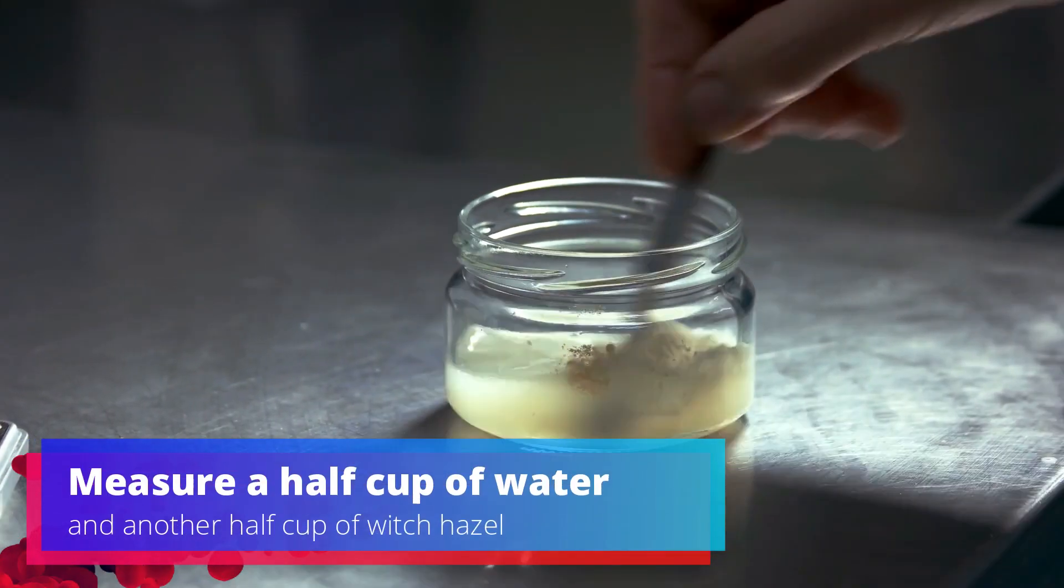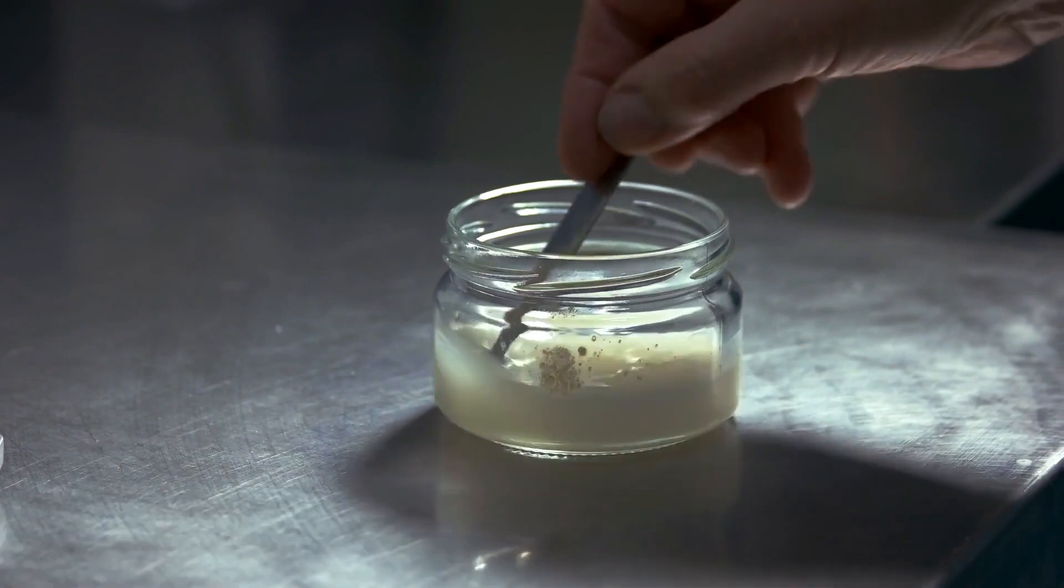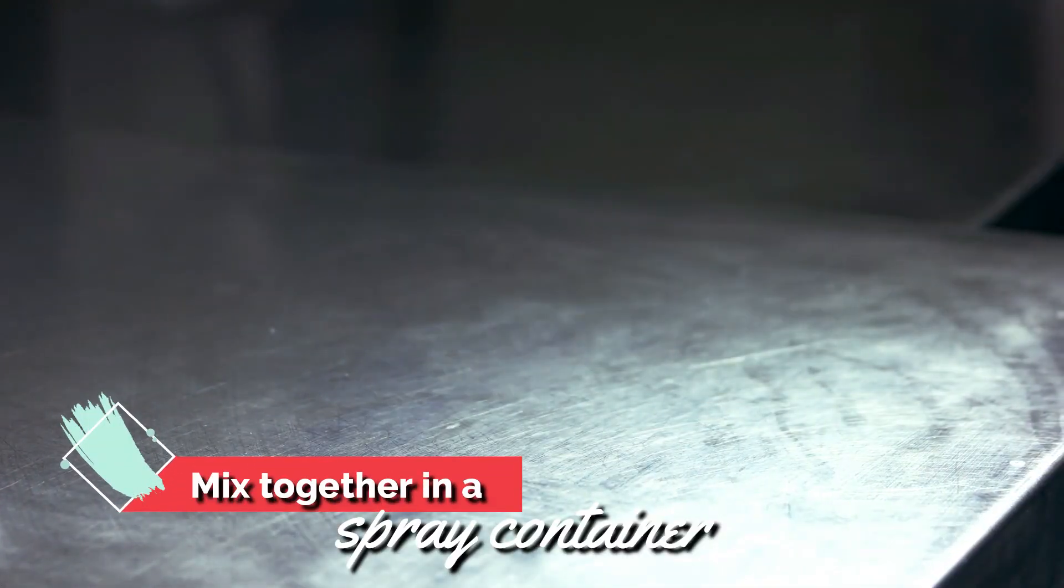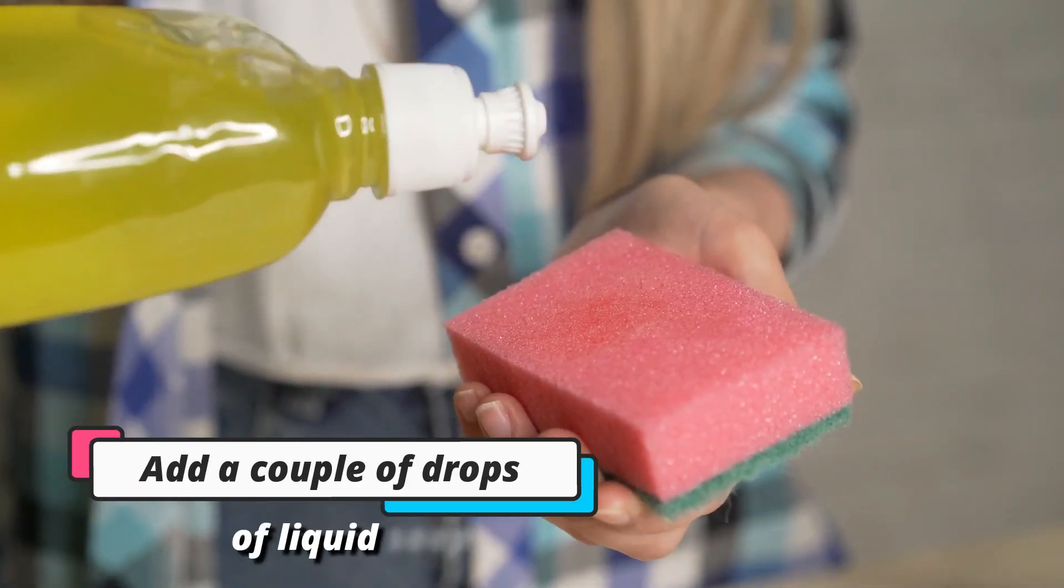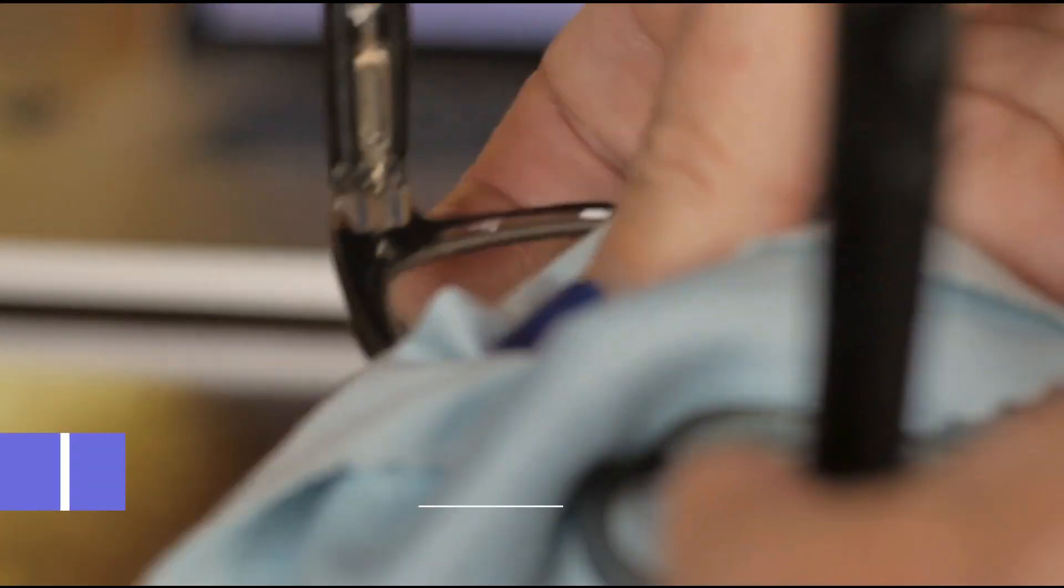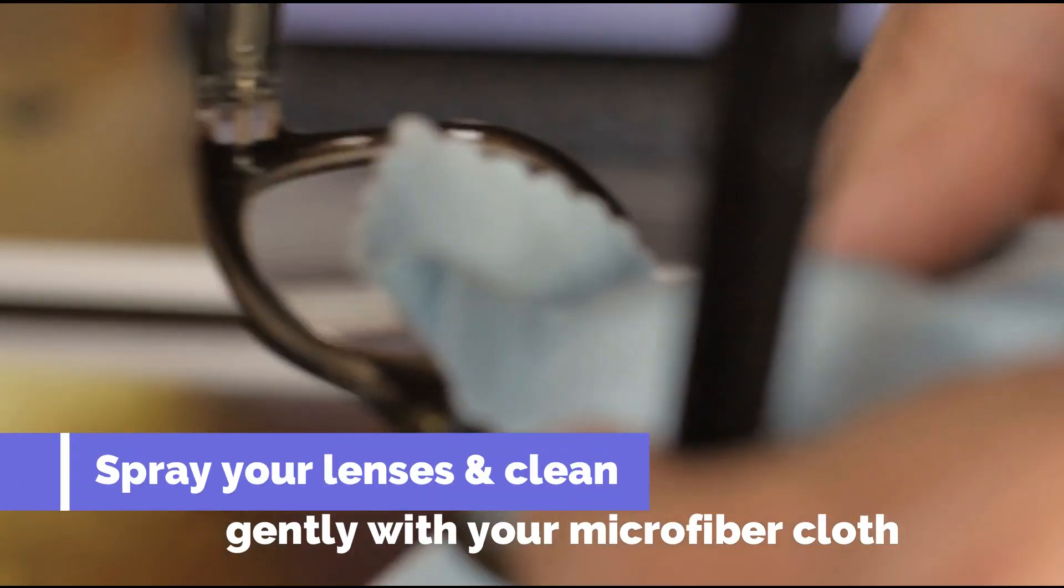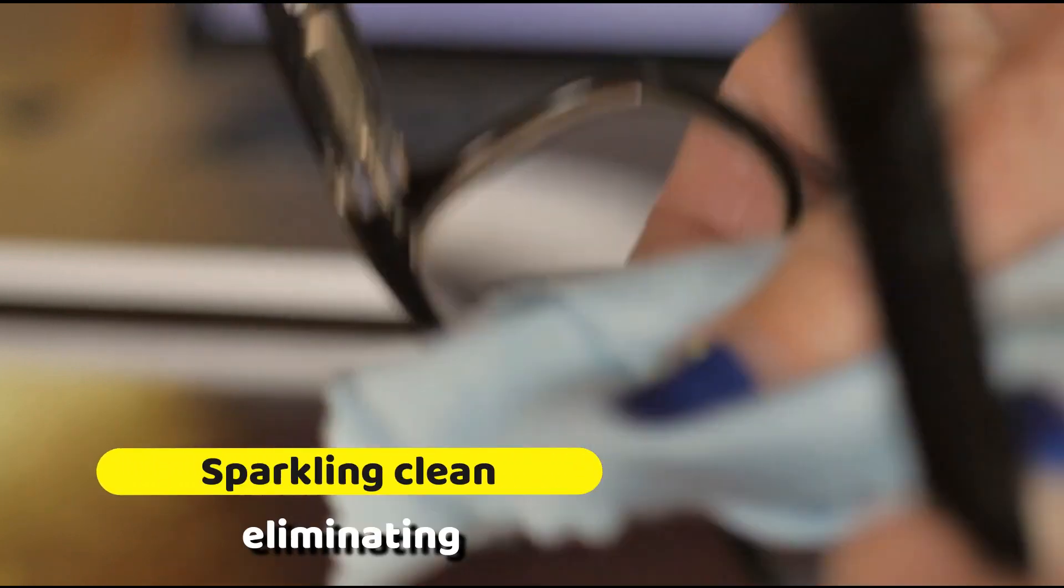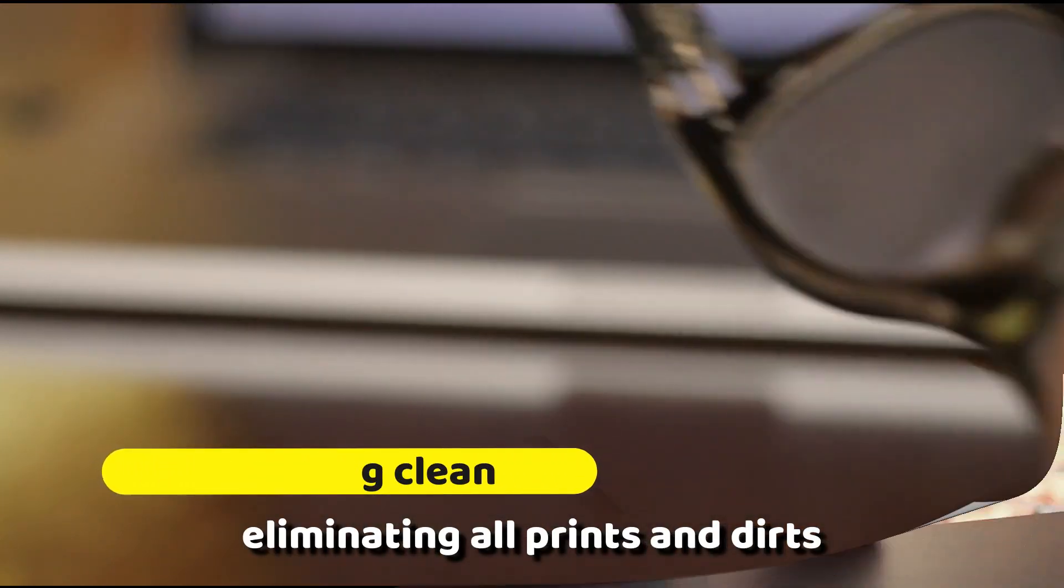Measure a half cup of water and another half cup of witch hazel and mix together in a spray container. Add a couple of drops of liquid soap and mix thoroughly. Spray your lenses and clean gently with your microfiber cloth. Your glasses will come out sparkling clean, eliminating all prints and dirt.